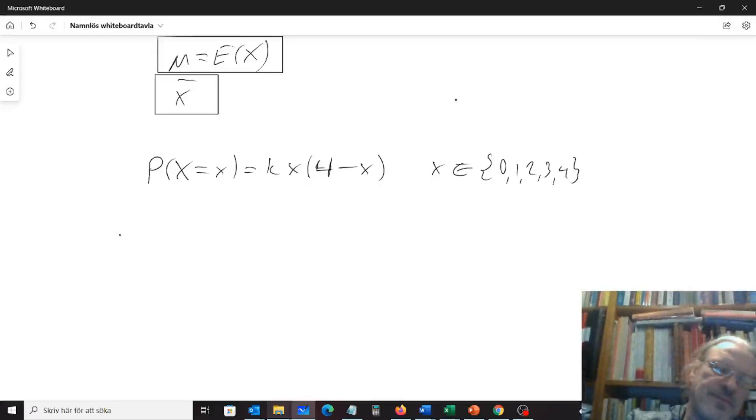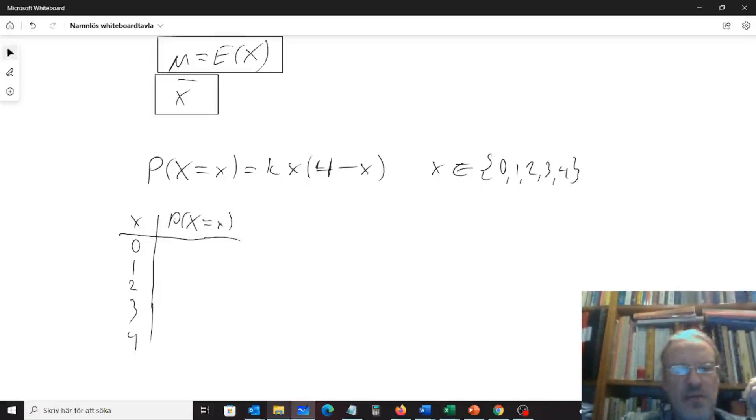Okay, we can start with drawing a table of our distribution. So x could be 0, 1, 2, 3, or 4. And the probability that our random variable equals that x value, we can check that in the formula. If x is 0, we can see that we get k times 0 times something. So that will give us 0. And the same thing with the 4. If you plug in 4 to our equation up here, or formula up here, we get 4 minus 4 is 0. So we get 0 down here too.